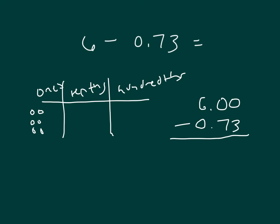And in order to subtract 7 tenths and 3 hundredths, we have to regroup. We take one of those ones. One of those ones equals 10 tenths.